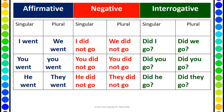For negative, we never say 'I not went'. Be careful — you must use the base form of the verb. So 'went' becomes 'go', and in past tense we use 'did'. So: I did not go, we did not go, you did not go, he did not go, they did not go. The past tense of 'do' is 'did'.